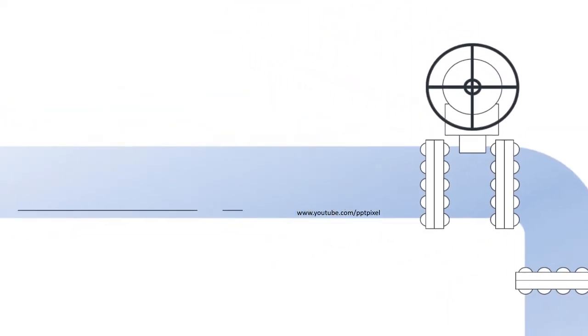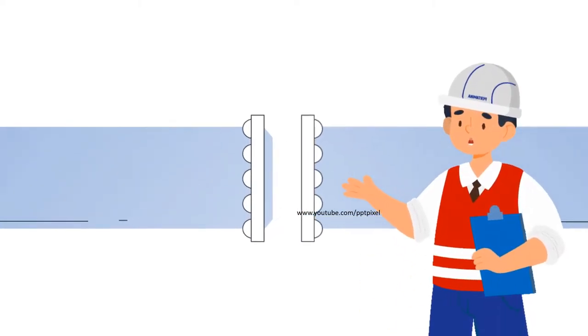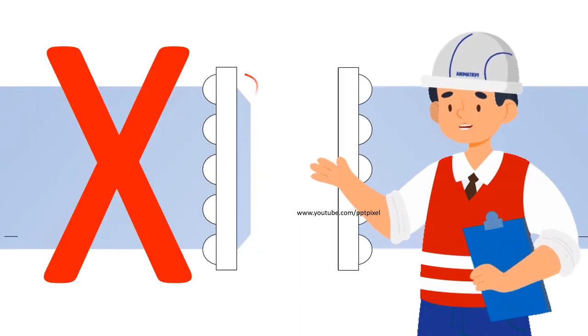Two straight pipes welded without bevel. Welding or fusion area only happens on the surface. Bevel must be prepared before we join two pipes with welding procedure. With bevel, the pipe will weld into the inner surface.